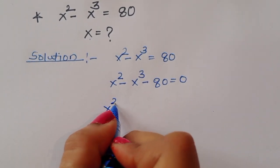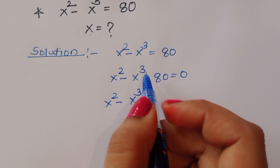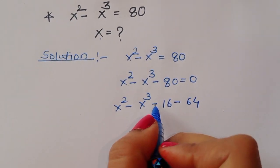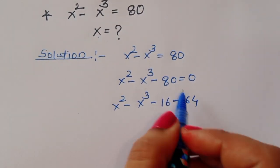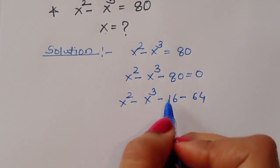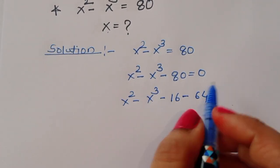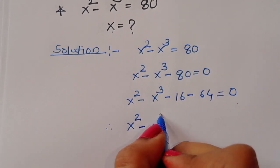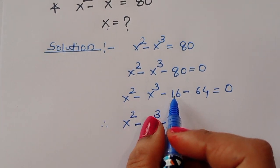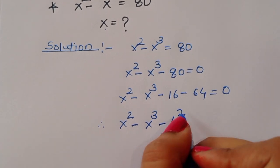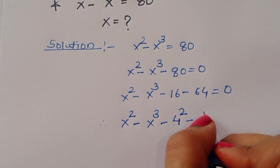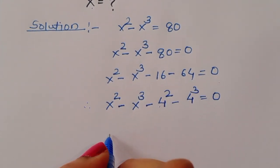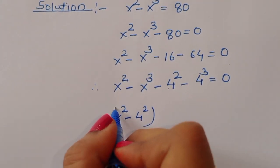Now for x squared minus x cubed minus 80, we can write 80 as 16 minus 64. Checking: 6 plus 4 is 10, 6 plus 1 is 7, plus 1 is 8, so minus minus plus gives us minus 80. Therefore, this 16 we can write as 4 squared, and 64 as 4 cubed.